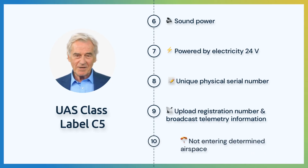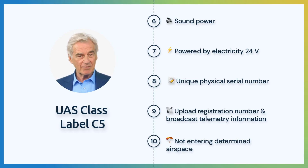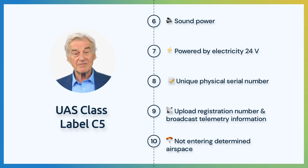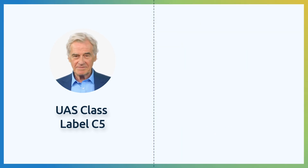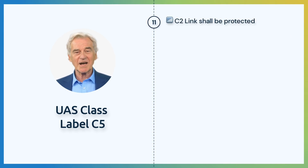Entering determined airspace shall not be possible for the UA. This limit shall be imposed smoothly, without adversely affecting the flight operation. Additionally, the UA shall notify the pilot through warnings. The C-2 link from the pilot to the UA shall be protected from unwanted third parties.